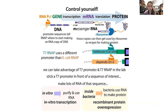T7 RNA polymerase is going to make RNA copies of DNA that is in front of its promoter sequence. We can take that promoter sequence and stick it in front of a gene that we want to make an RNA copy of — a sequence of interest — to make lots of RNA from it. We can do this in vitro, in a test tube outside of cells, with really pure, minimal conditions, and then purify and use it. This is in vitro transcription.